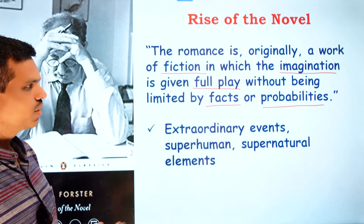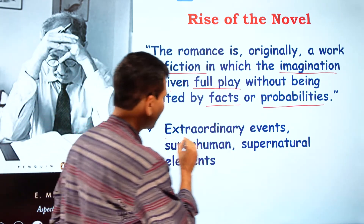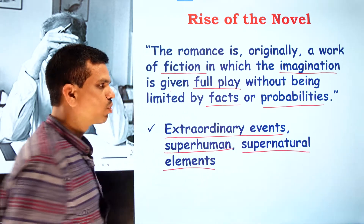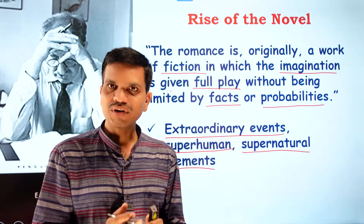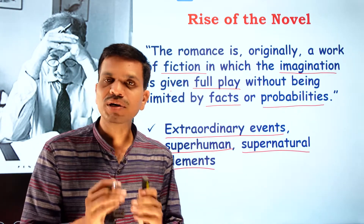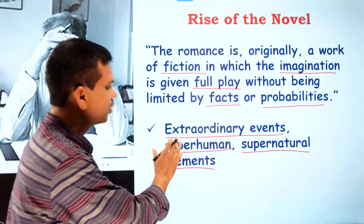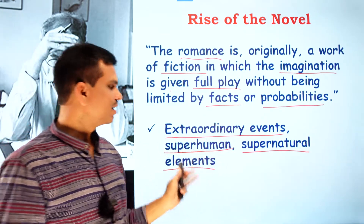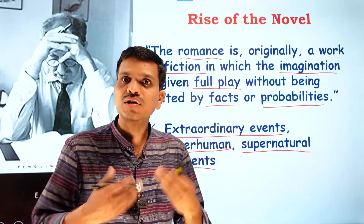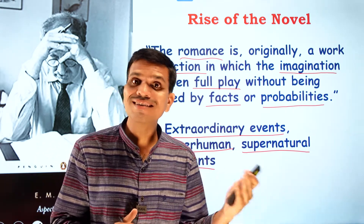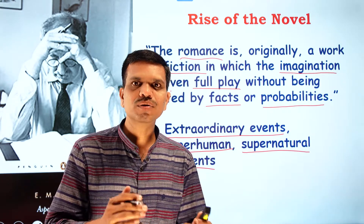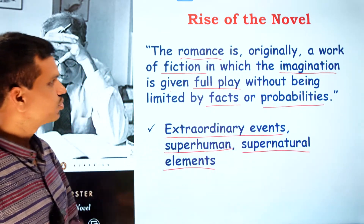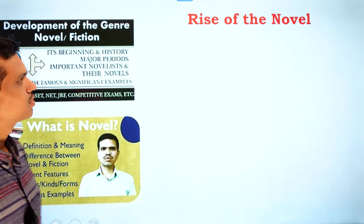The key features of romance include extraordinary events, superhuman and supernatural elements. In the novel you find the opposite — these elements are used on a very limited scale. In romances, the hero does tasks beyond the capacity of human beings. This is the very feature of romance, and the novel stands in contrast to it.